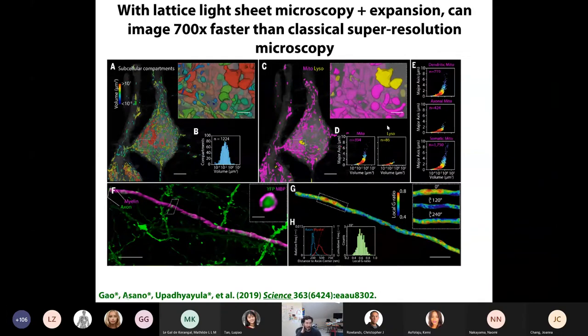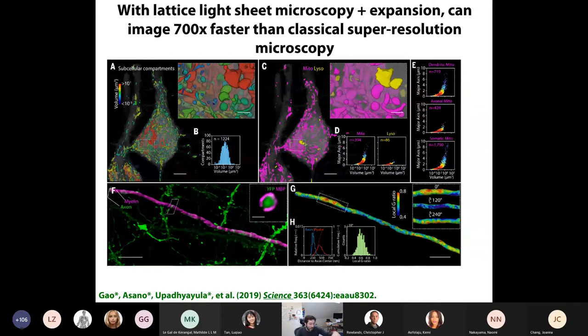So take-home message number one is with expansion microscopy, as we call it, you can do nanoimaging on a regular microscope. We just upgraded all the microscopes around. But when you expand, you know, you fill it with water, right? You expand it a hundred fold by adding water, which causes the baby diaper material, sodium polyacrylate for the aficionados, to swell. As a result, the end result is about 99 percent water. So you can also use so-called light sheet microscopes, where you shine light from one angle and take a picture at an orthogonal angle, and you can go at blazingly fast speeds.